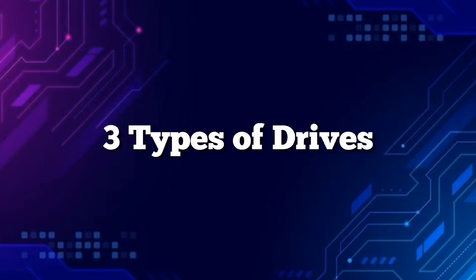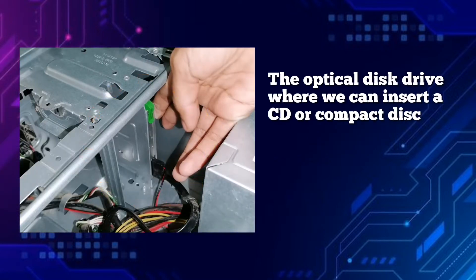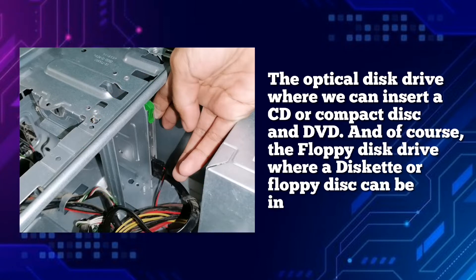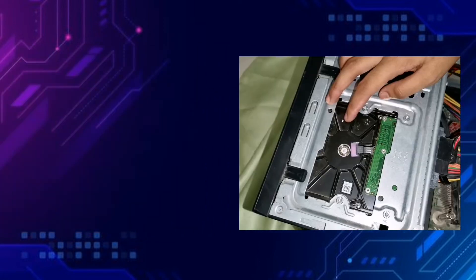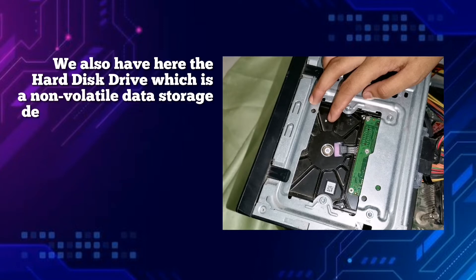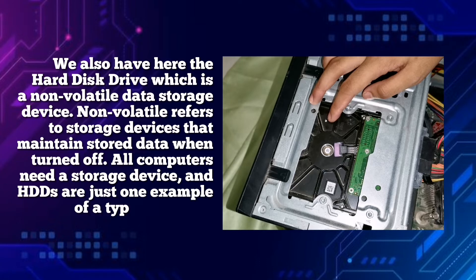We have here three types or kinds of drives. The optical disk drive, where we can insert a CD or compact disk and DVD. And of course, the floppy disk drive, where a diskette or floppy disk can be inserted. We also have here the hard disk drive, which is a non-volatile data storage device. Non-volatile refers to storage devices that maintain stored data when turned off. All computers need a storage device, and HDDs are just one example of a type of storage device.